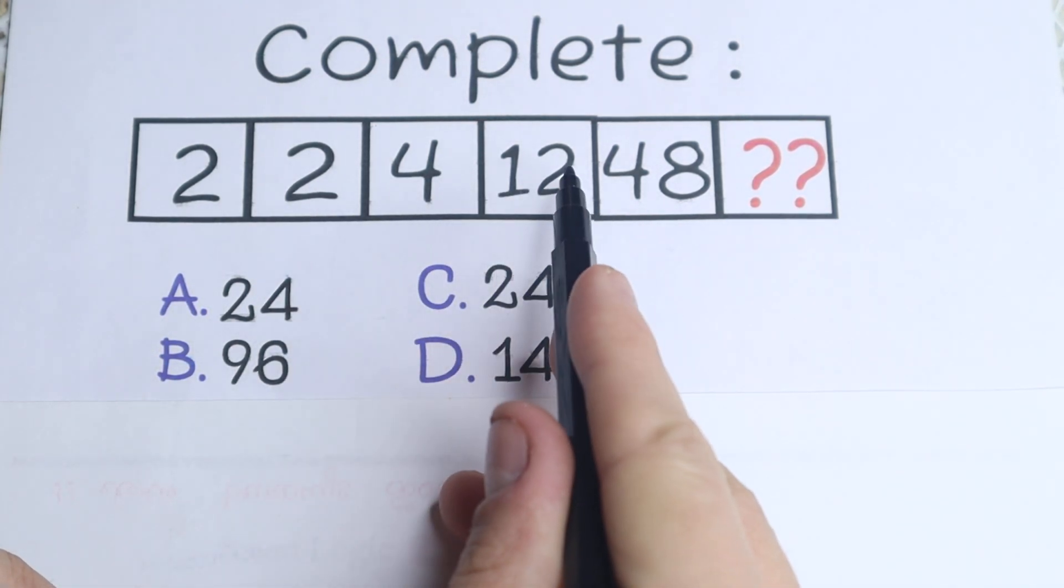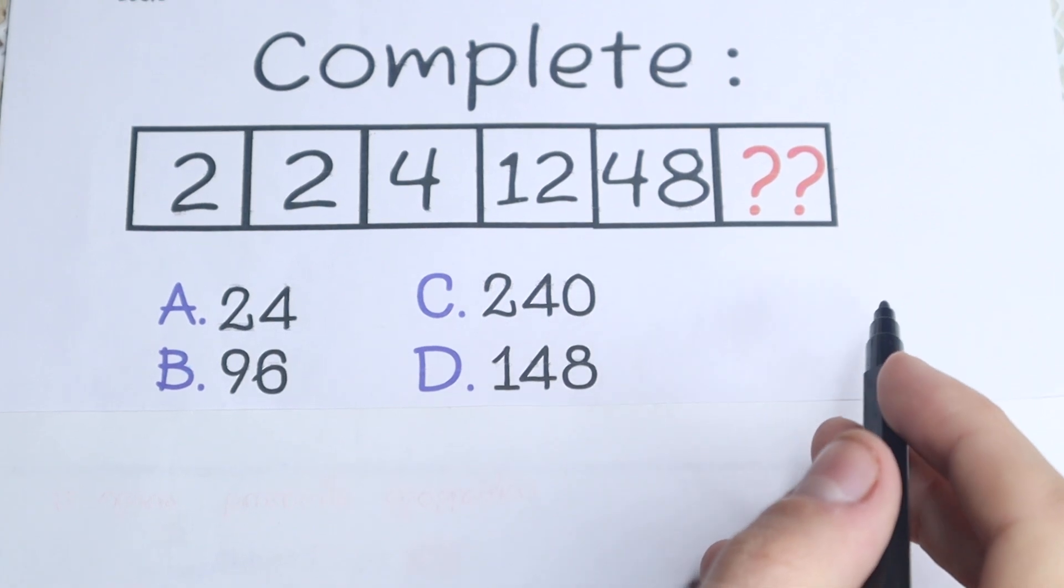We have 2, 2, 4, 12, 48 and we need to find the last number in this numeric series.